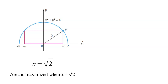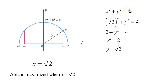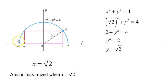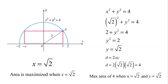Now finding y: from x squared plus y squared equals 4, with x equal to the square root of 2, we get 2 plus y squared equals 4, so y squared equals 2, and y equals the square root of 2. We get maximum area when x equals root 2 and y equals root 2. The maximum area is 2xy: 2 times root 2 times root 2 equals 2 times 2 equals 4. So the maximum area is 4 square units when x equals root 2 and y equals root 2.